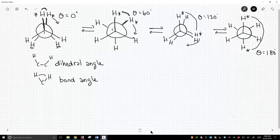So here are our different conformations of ethane determined by rotating about this carbon-1, carbon-2 bond.